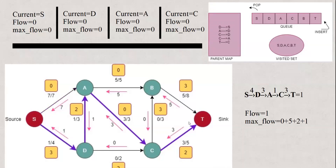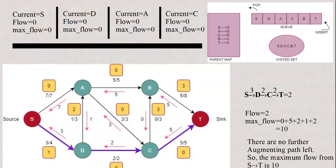Following the same algorithm again, the augmenting path found is S→D→A→C→T with maximum flow of 1. So flow = 1 and max flow = 0 + 5 + 2 + 1 = 8. We update the flow network along path S→D→A→C, updating residual capacity using the formula: residual capacity = capacity − flow, and simultaneously updating reverse residual capacity. Following the same step again, the next augmenting path is S→D→C→T with flow of 2. Maximum flow = 0 + 5 + 2 + 1 + 2 = 10, and there are no further augmenting paths left as residual capacity for every possible path is 0.